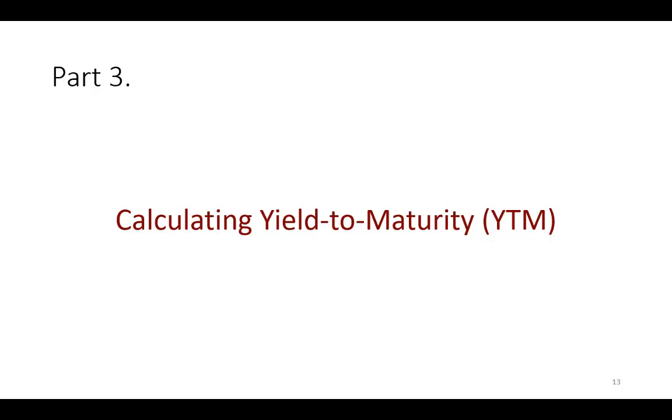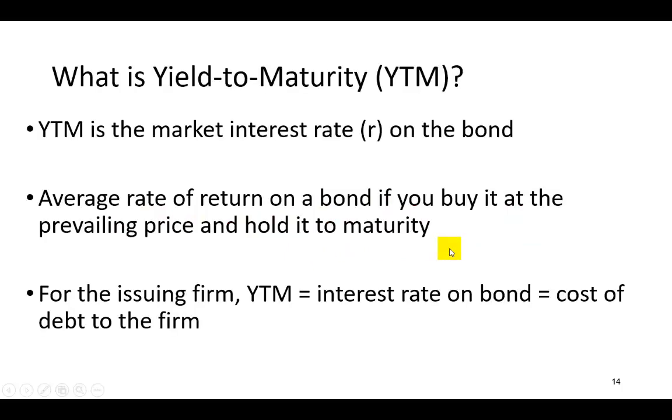Hello, in part three of this bond valuation series, I'm going to show the calculation of the yield to maturity, which, as we learned earlier, is actually the market interest rate on the bond. This market interest rate, the yield to maturity, represents the average rate of return that you're going to be earning on the bond if you buy it right now at the prevailing market price and you hold it until maturity.